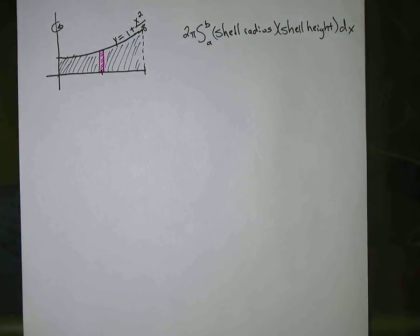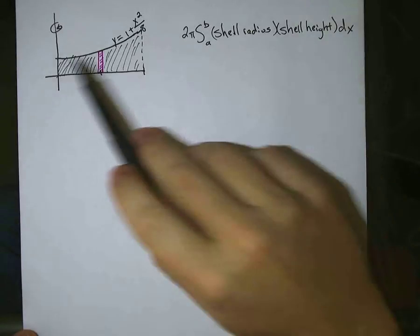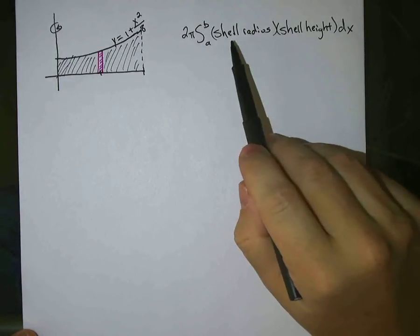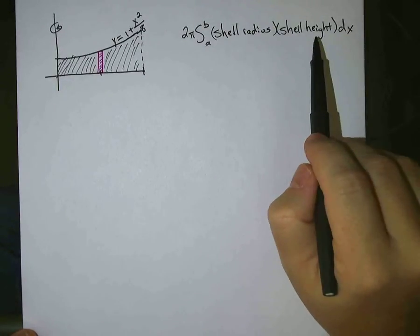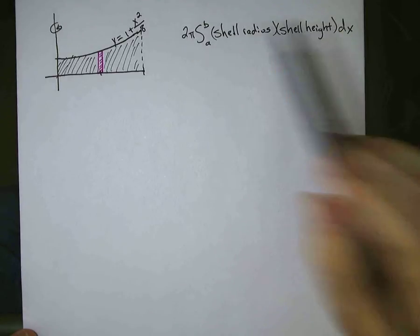Okay, and using the shell method, I've got it written here, when you're rotating around the y-axis, this is the formula you want to use, the shell radius times a shell height, with respect to x, here's my 2 pi.